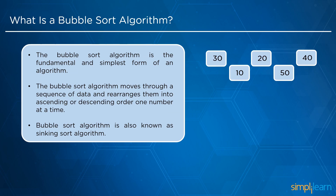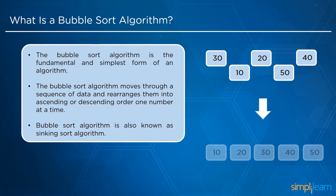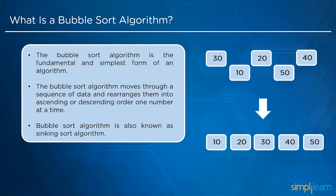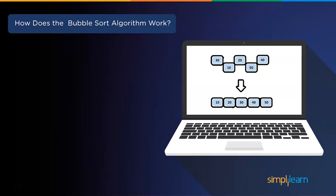Here we have some randomly distributed elements: 30, 10, 20, 50, and 40. After performing the bubble sort algorithm, all the elements are sorted as 10, 20, 30, 40, and 50. We will see how this is done in the next segment, where we will understand the working terminologies of the bubble sort algorithm.